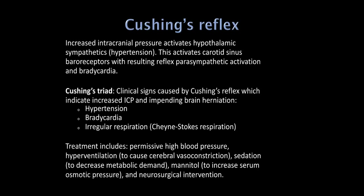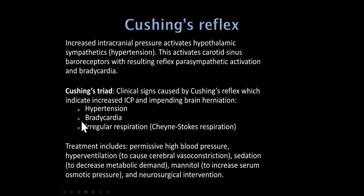The Cushing's reflex: increased intracranial pressure from a supratentorial mass activates hypothalamic sympathetics, raising blood pressure. That activates carotid sinus baroreceptors, which activates the parasympathetic system and lowers heart rate. Cushing's triad is high blood pressure, low pulse rate, and Cheyne-Stokes respiration. In a confused or comatose patient with high blood pressure and low pulse, this is a neurologic emergency suggesting increased intracranial pressure — do a brain scan right away.